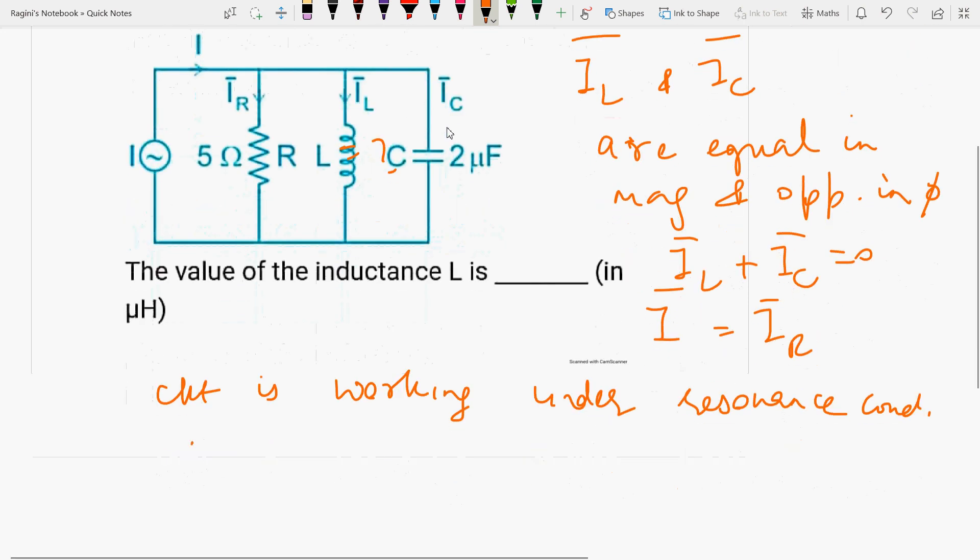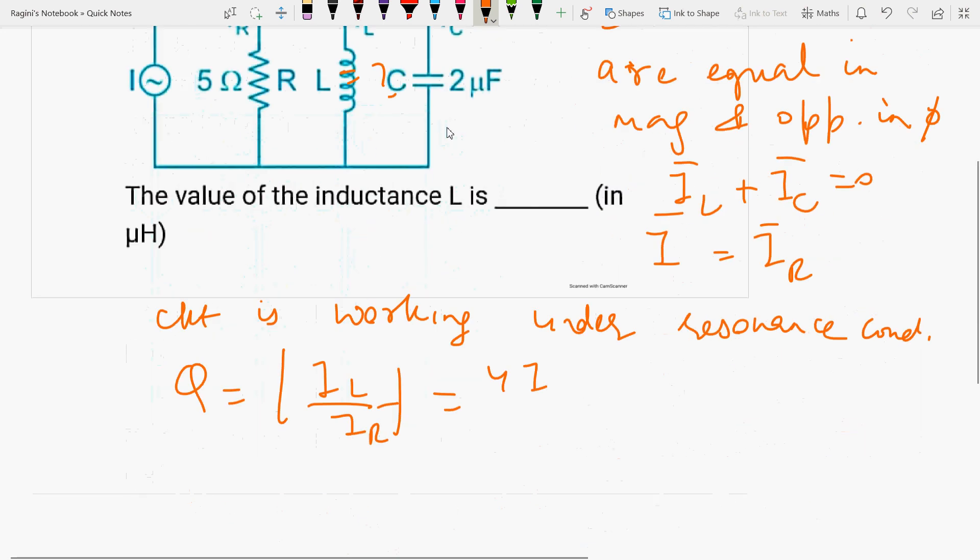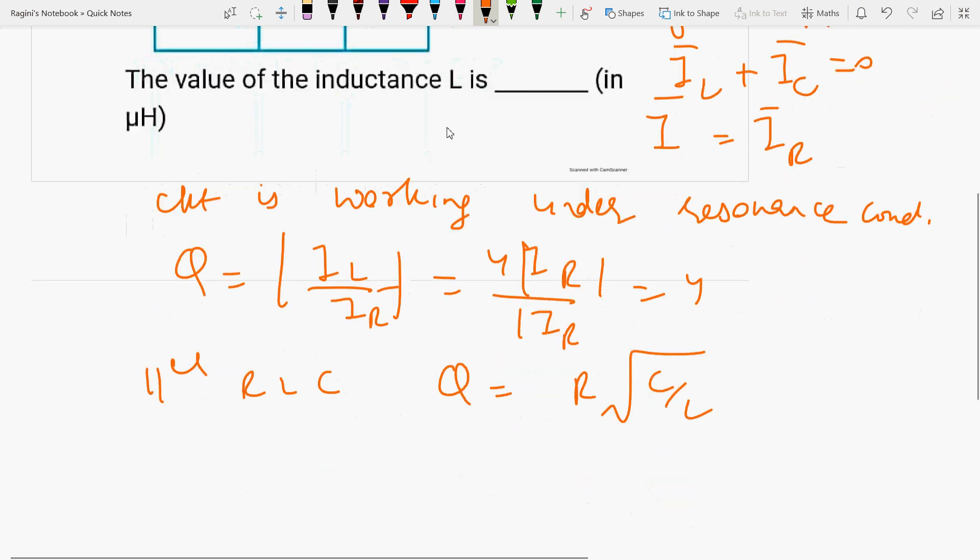So here, the quality factor is equal to mod IL upon IR, which equals 4 times. Because the value given is that IL and IC are 4 times of IR, so IL value here will be 4 times of IR by IR. So the value is 4. For a parallel RLC circuit, quality factor is R under root C by L.